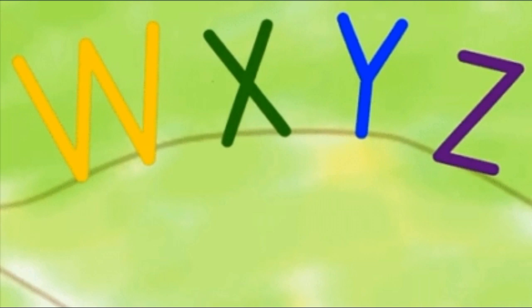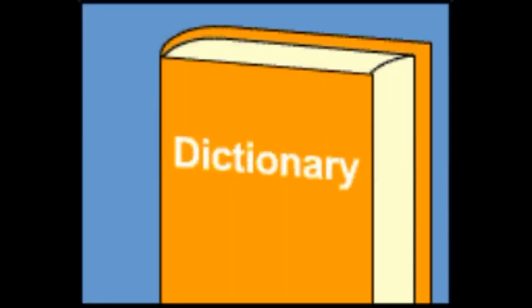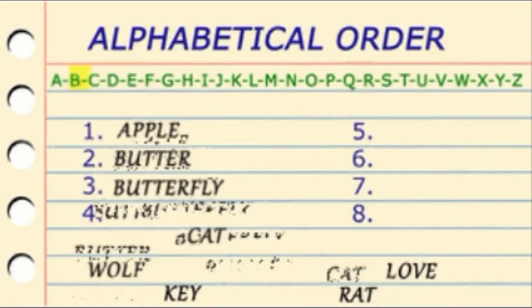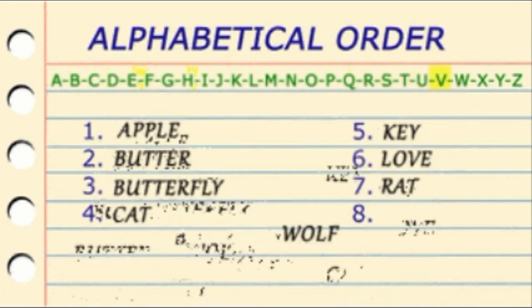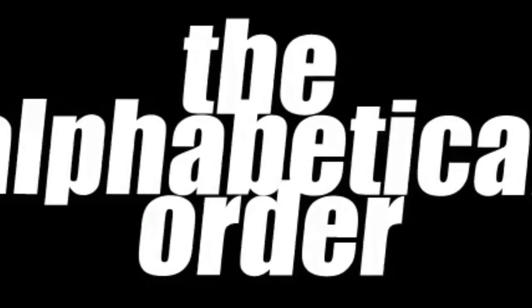We should say A B C D E and so on. Okay, and if we open a dictionary we will find the words are arranged according to this order. This order is called the alphabetical order.